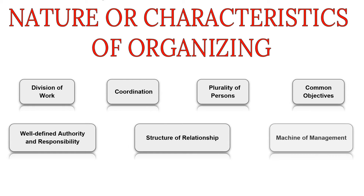The next characteristic is machine of management. Organization is considered to be a machine of management because the efficiency of all the functions depends on an effective organization. The last characteristic is universal process. Organization is needed both in business and non-business organizations. Not only this, organization is needed when two or more than two people work jointly.